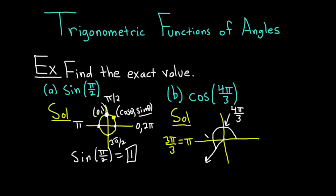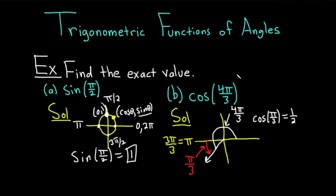Step one: draw your angle. Step two: find your reference angle, which is the positive angle made with the x-axis and your angle. This red angle is your reference angle. To get from 3 pi over 3 to 4 pi over 3, you just need pi over 3. Now think about the trig function value of the reference angle pi over 3. The cosine of pi over 3 is simply one half.